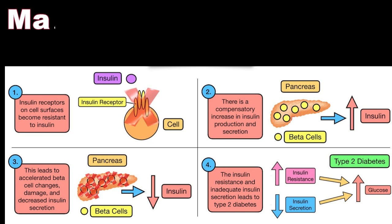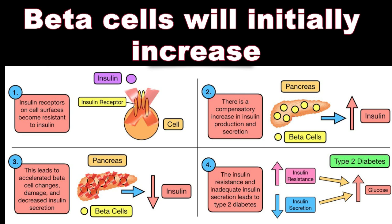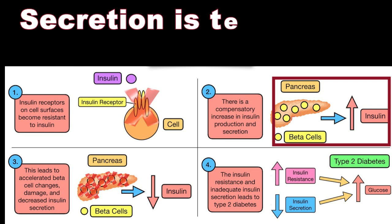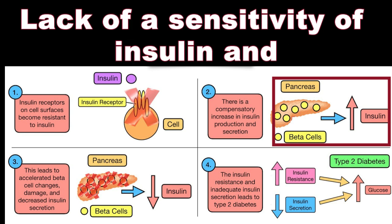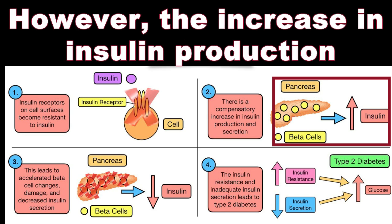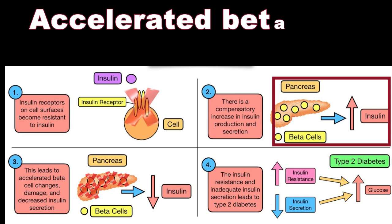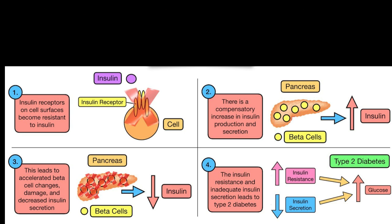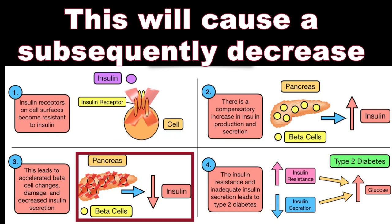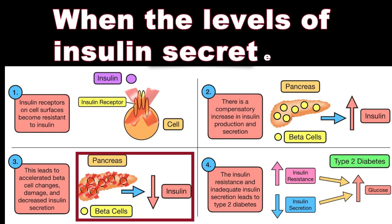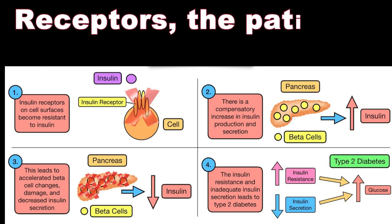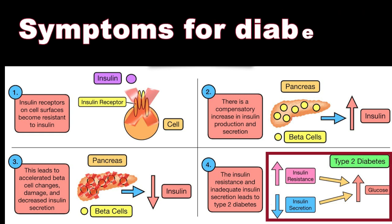To compensate for insulin resistance and maintain normal glucose levels, the pancreatic beta cells will initially increase insulin synthesis and release. This increased insulin production is a temporary fix to overcome reduced insulin sensitivity and allows body cells to take up glucose. However, the continued increase in insulin production eventually leads to accelerated beta cell damage — the beta cells tire out and do not produce as much insulin. When insulin secretion is no longer enough to compensate for receptor insensitivity, patients begin to experience symptoms of diabetes.